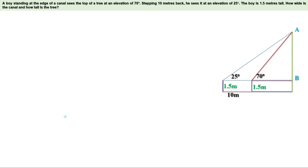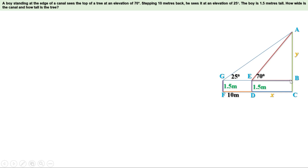Now let us give a name for the figure. We need to find the width of the canal, that is CD in this figure, and we know that is equal to BE. Also we have to find the height of the tree, that is AC in the figure. And we know BC is equal to 1.5. Therefore, it is enough to find the length of AB to find the height of the tree. That means we need to find AB and BE. Let me take CD equal to X, then BE is also equal to X. Let AB equal to Y. Let us find two right triangles in the figure. The first right triangle is triangle ABE and the second right triangle is triangle ABG.